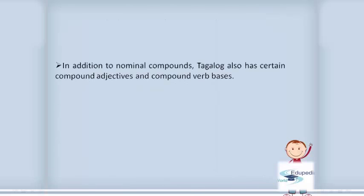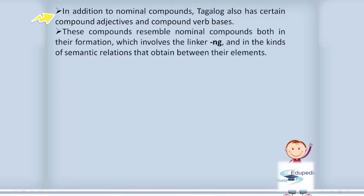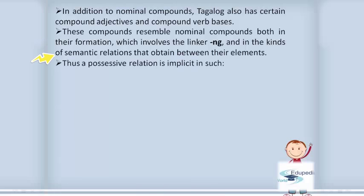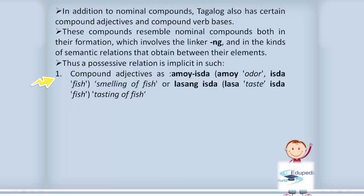In addition to nominal compounds, Tagalog also has compound adjectives and compound verbs. These compounds resemble nominal compounds both in their formation, which involves the linker 'nang,' and in the kinds of semantic relations that obtain between their elements. A possessive relation is implicit in such compound adjectives as 'amoy isda' (amoy = odor, isda = fish: smelling of fish) and 'lasang isda' (lasang = taste, isda = fish: tasting of fish).